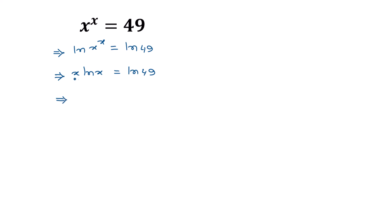Now x can be rewritten as e to the power ln of x, since e to the power ln of x equals x. So we have e to the power ln of x times ln of x is equal to ln of 49.